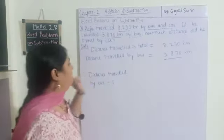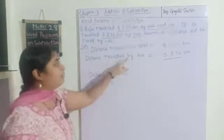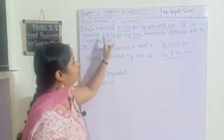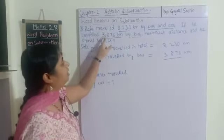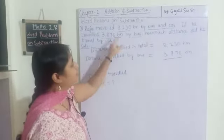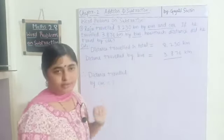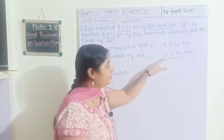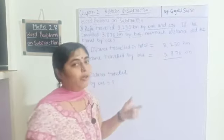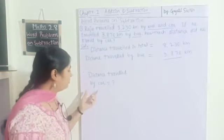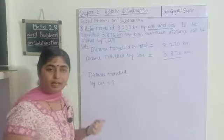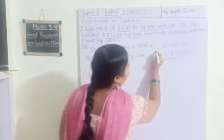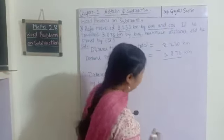Distance traveled by bus: how many kilometers did he travel by bus? Three thousand eight hundred and seventy-six kilometers by bus. If we subtract this number from the total, we will get the distance traveled by car. So what we have to do here is subtract.